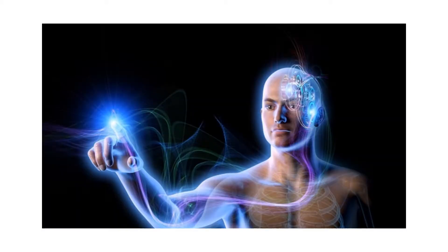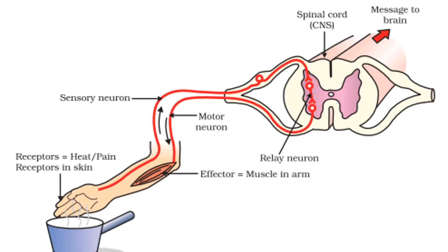Hi everyone! Today we are talking about nerves and hormones. Being large multicellular creatures, certain parts of our bodies need to talk to other parts of our bodies. So for example, if I stand on a pin, the muscles of my leg need to know about it in order to respond. And this coordinated response of pulling your leg away requires nervous communication.